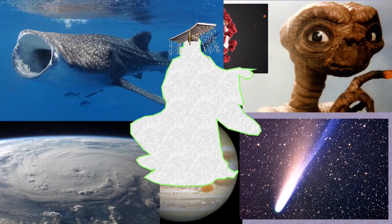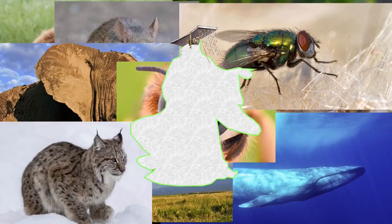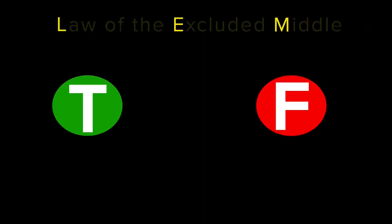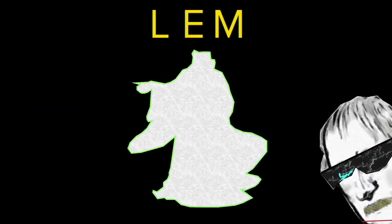Well, we could look at all things in the known universe that are not hairy, and it's very unlikely we would find the present emperor of China amongst these non-hairy things — so the statement is true, right? Hold up. Because if we performed a similar observation amongst hairy things, we also would not find the present emperor of China. This seemingly violates the Law of the Excluded Middle, the LEM. The LEM states that for any proposition stated, it must either be true or its negation must be true.